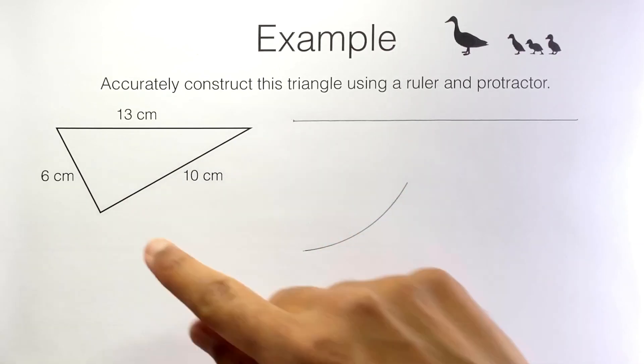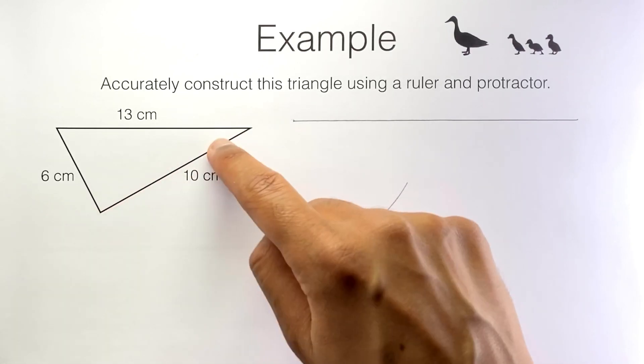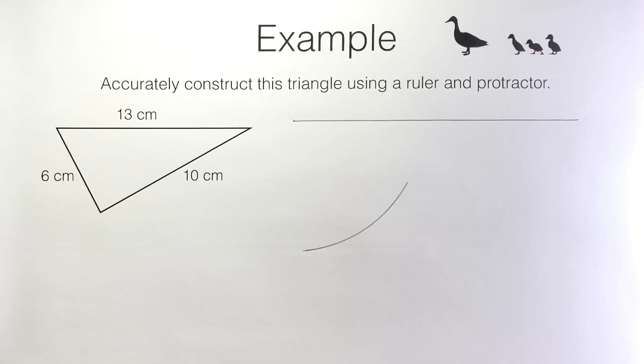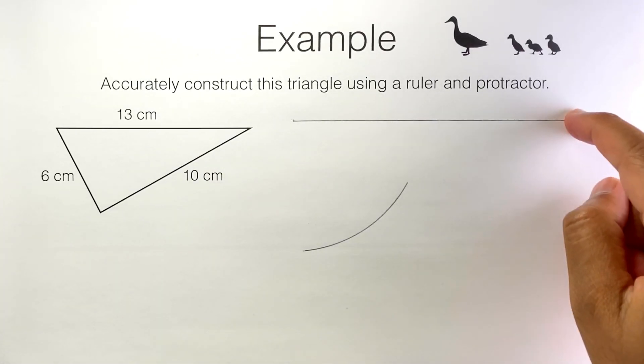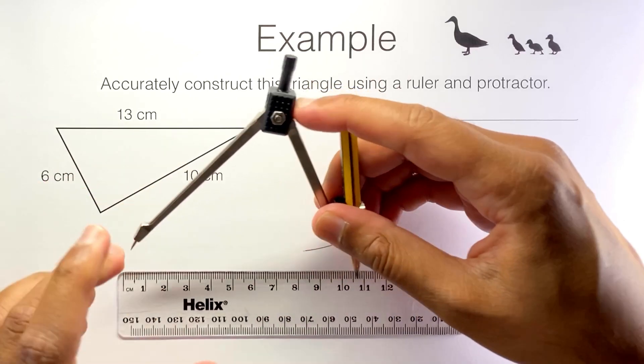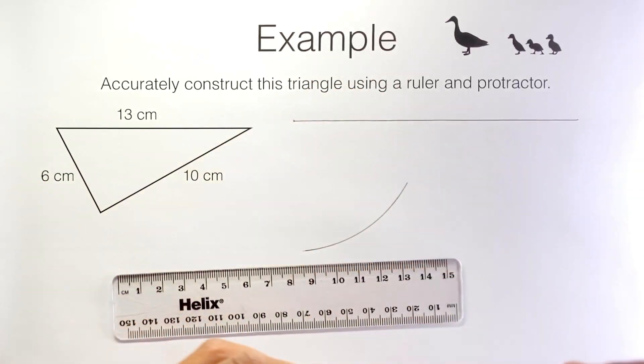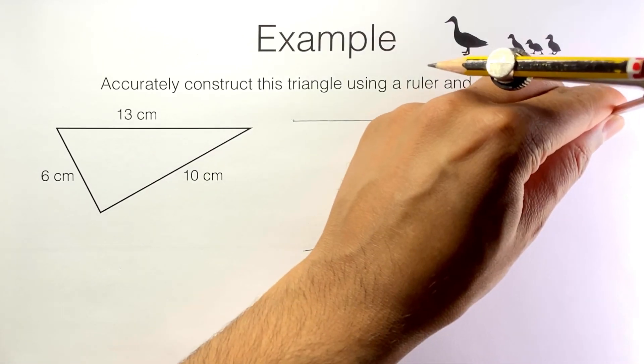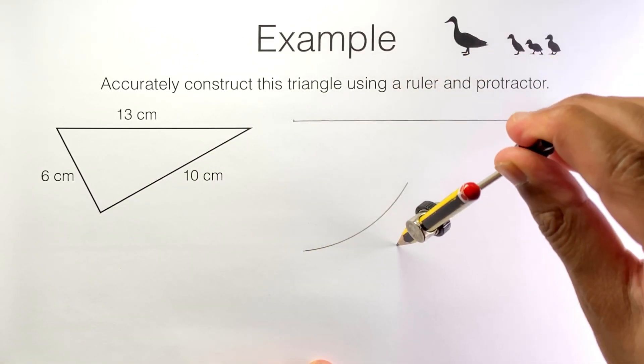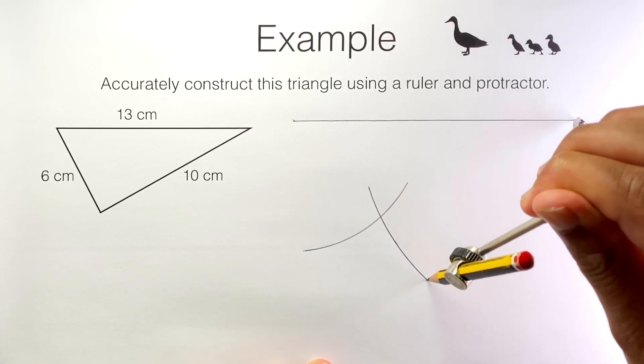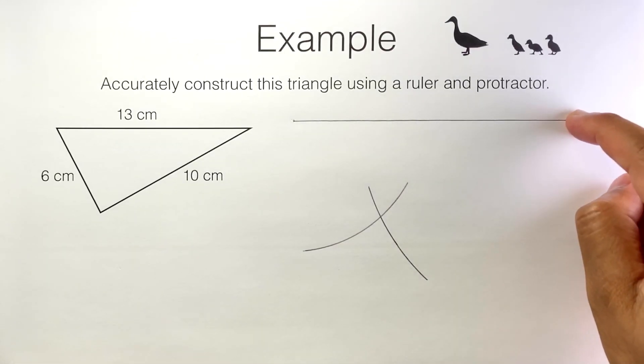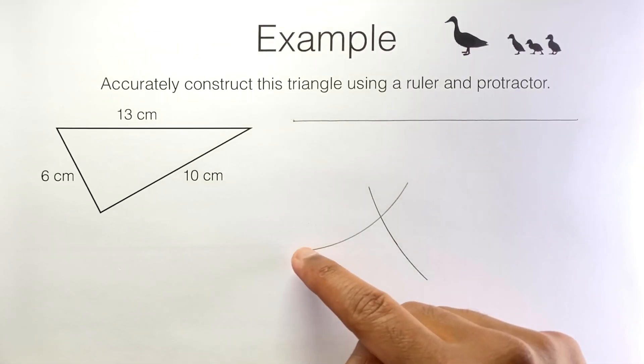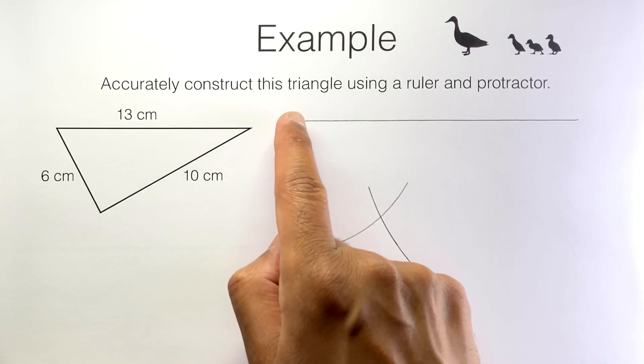But we also know that this vertex needs to be 10 centimeters from the other end of the side. So I can measure out 10 centimeters on my compasses, position the needle over on that side, and draw out an arc from there. Everywhere on this arc is 10 centimeters from this end of the side. Everywhere on this arc is six centimeters from this end of the side.